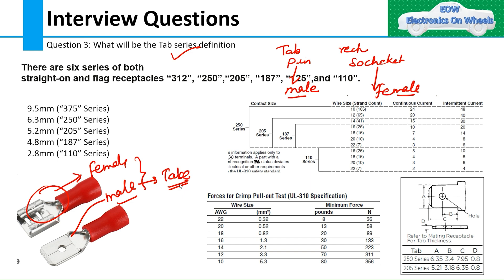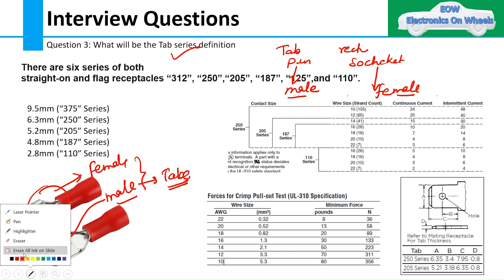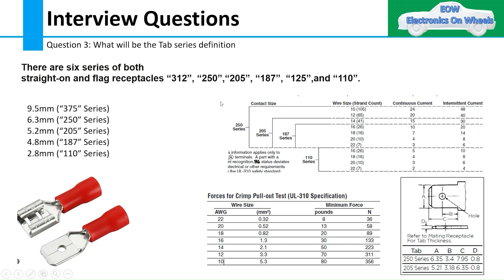There are many series in tab terminal definition, but I will tell you some of the major ones. As you can see, these are some of the major series: 312, 250, 205, 187, 125, and 110. These series are defined by the tab width.